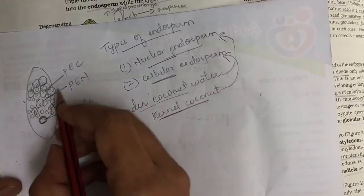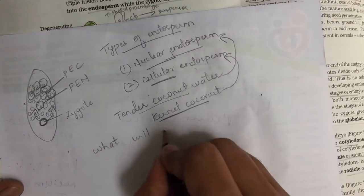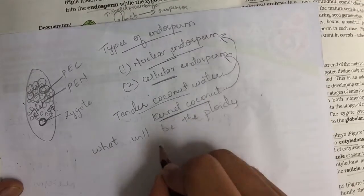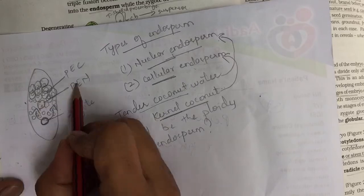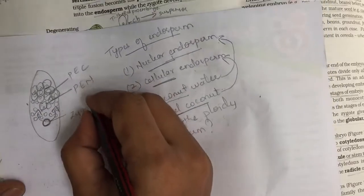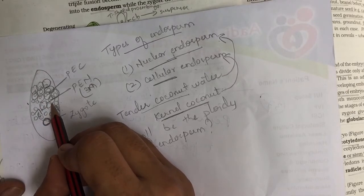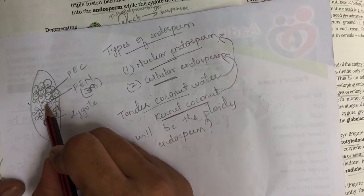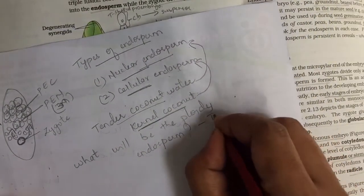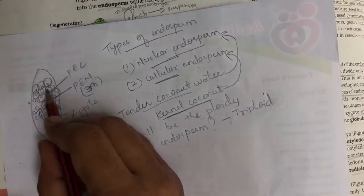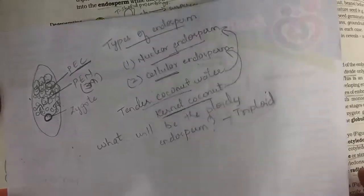What is the ploidy of endosperm? We said it consists of primary endospermic nucleus and primary endospermic cell — these are triploid, because of triple fusion. In triple fusion, one male gamete fuses with two polar nuclei, making it triploid. All cells subsequently formed are also triploid. So the ploidy of endosperm is triploid, and endosperm is formed from the primary endospermic cell.